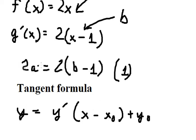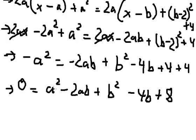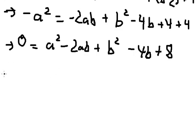We divide both sides by 2 and we get a equals b minus 1. Now we need to substitute a with (b minus 1) throughout the equation.